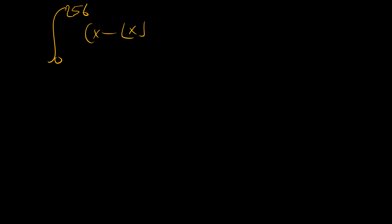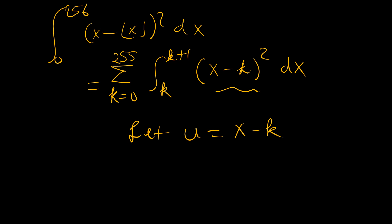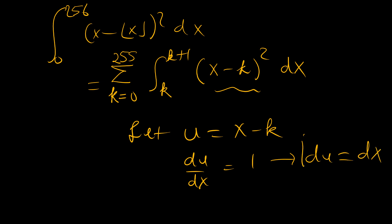Let's look at a more interesting way. The integral can be written as a sum of strips: k equals 0 to k equals 255, because we are looking at the lower value of k, and we're integrating from k to k plus 1. In each strip we have x minus k, squared. Now, to clean this up, let u equal x minus k, such that du/dx equals 1, and that means I could substitute du for dx.